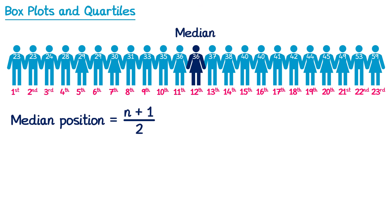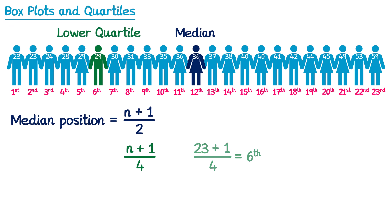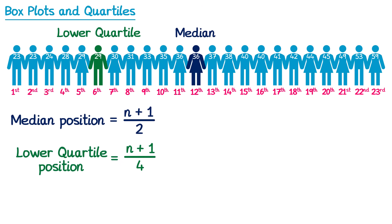Now there are some other people in this line that we're often interested in. If the median person is halfway through the line, what about the person that's one quarter of the way through the line? So instead of doing n plus 1 divide by 2, we would do n plus 1 divide by 4. For this example n is 23, so we do 23 plus 1 divided by 4 and we end up with 6. So the 6th person is one quarter of the way through the line — that's this person here. The name we assign to this is the lower quartile. So to find the lower quartile's position we do n plus 1 divide by 4.